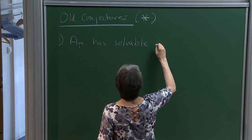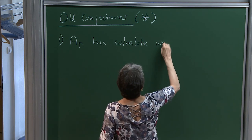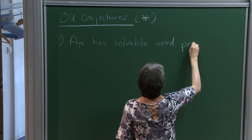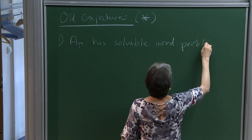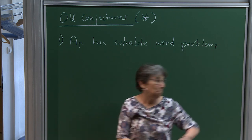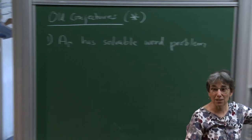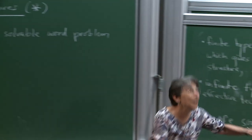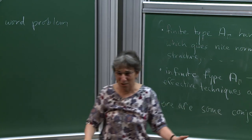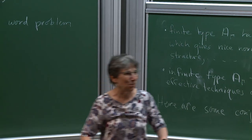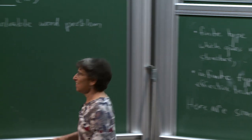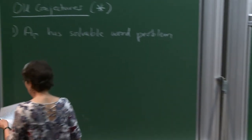Conjecture 1: A gamma has a solvable word problem. If you're a geometric group theorist you won't believe this - we don't even know if there is an algorithm to solve the word problem. We think they do, but it hasn't been proved for infinite type.